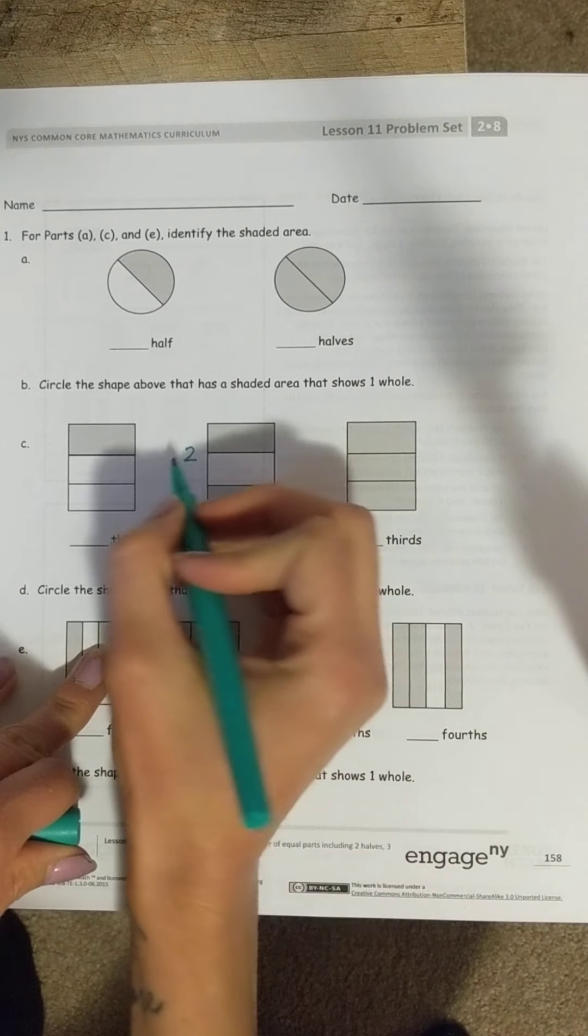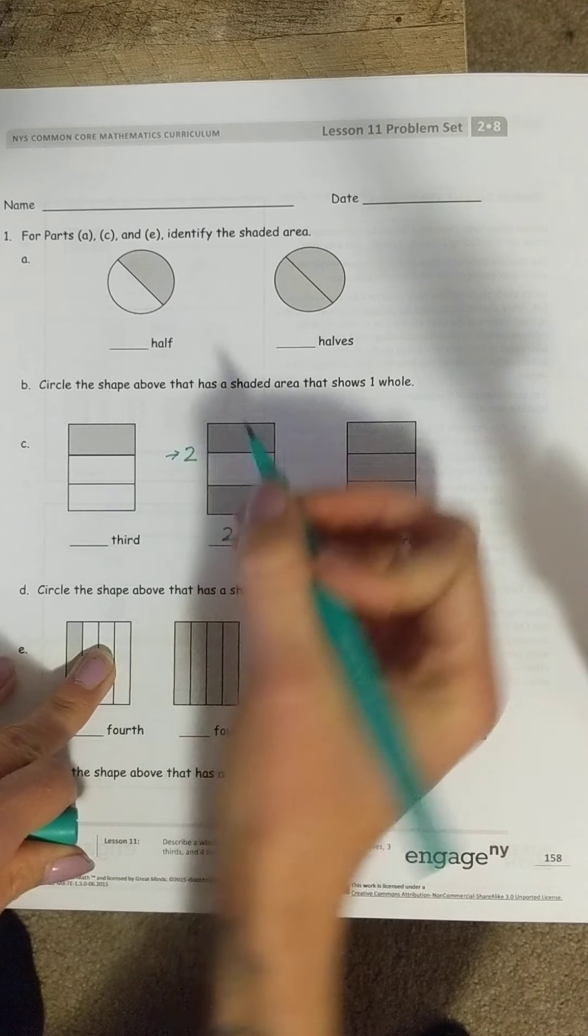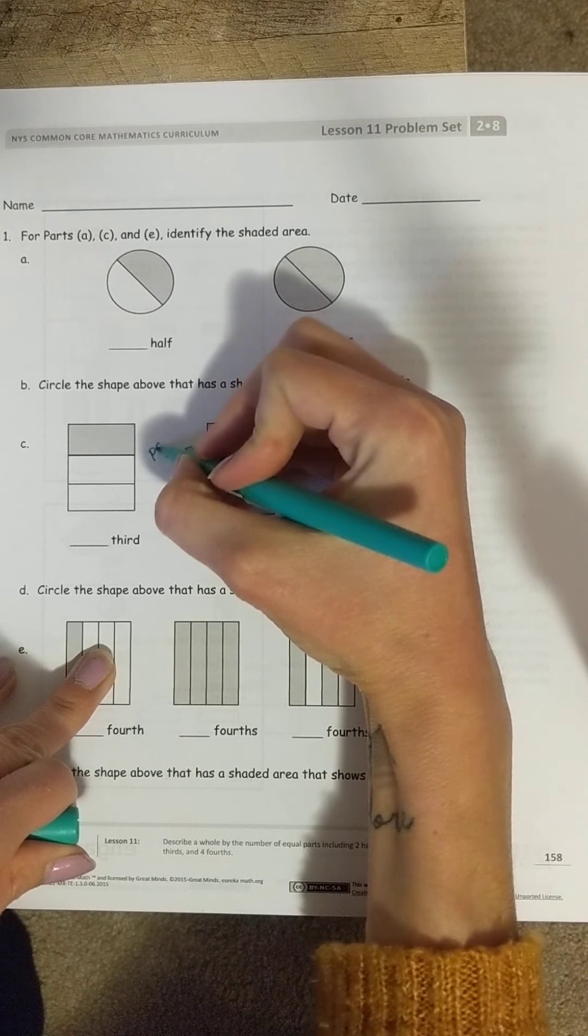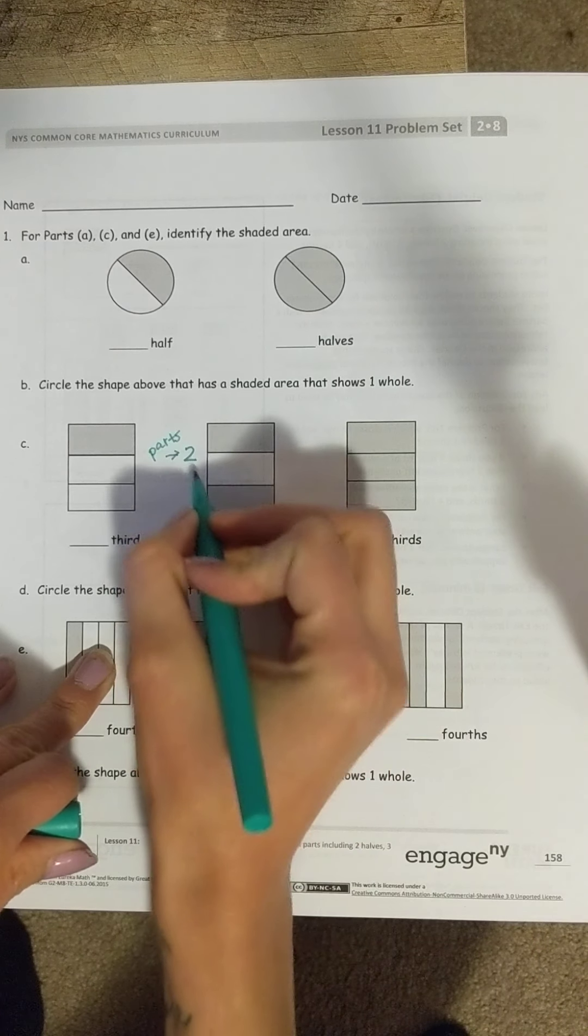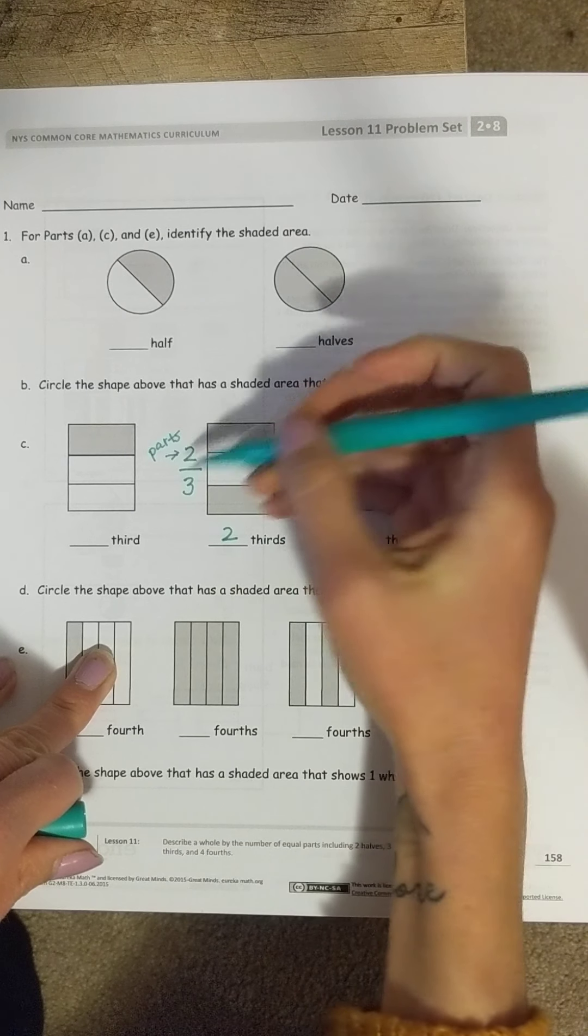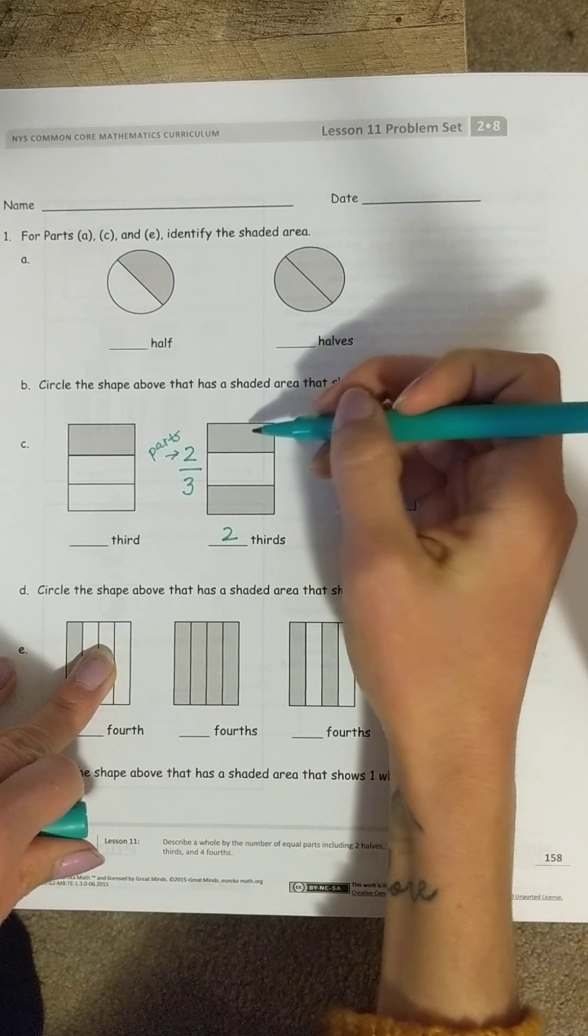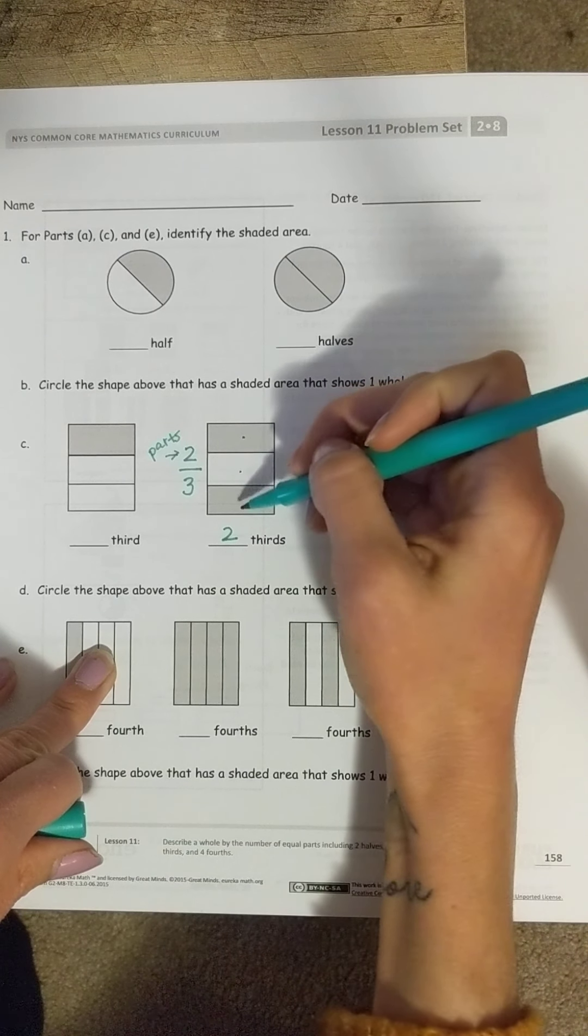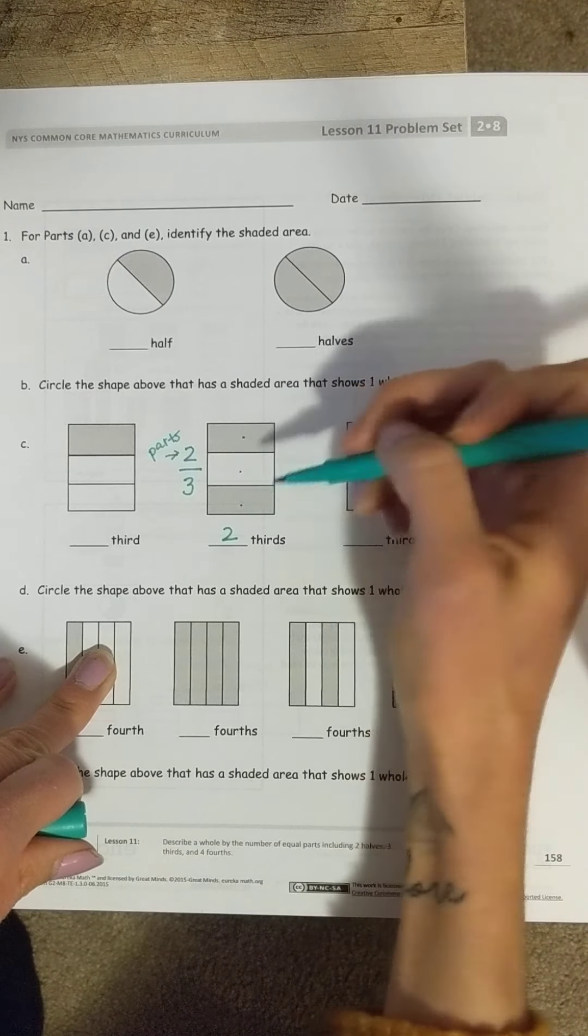I want you also to practice writing the fraction on the side. How we can read a fraction is that the top number is the number of parts that are shaded in. The bottom number is the number of parts that are in the whole. I got that number by counting one, two, three parts in the whole. That's why it says thirds.